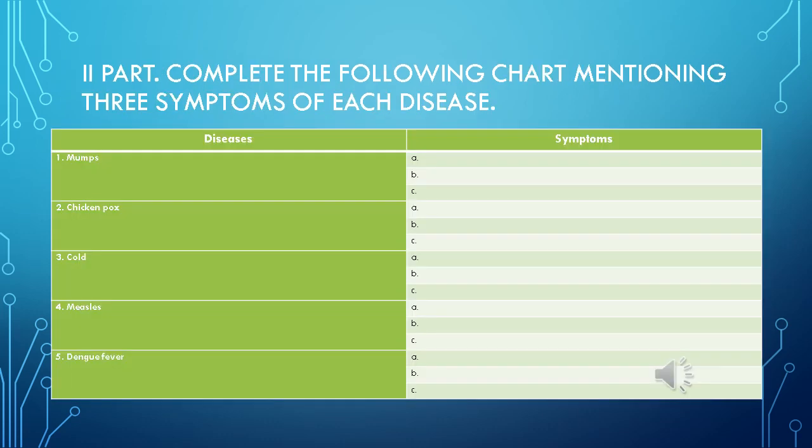The second part of the practice is about completing the following chart, mentioning three symptoms of each disease. Number one: mumps. Number two: chicken pox. Number three: cold. Number four: measles. And number five: dengue fever. On the right column, you need to write at least three symptoms of each one.